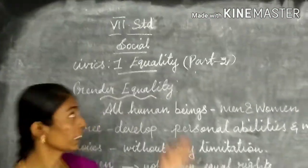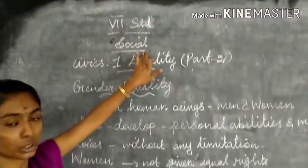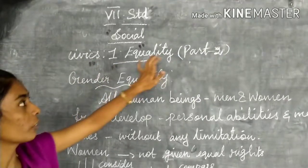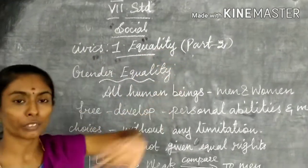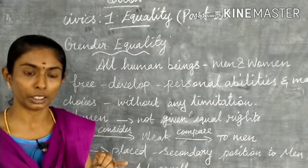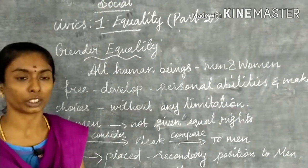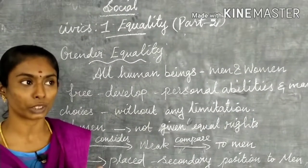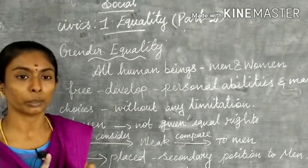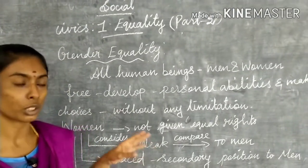Good morning students. This is the class for the 7th standard, subject Social, and the topic is Civics, first lesson: Equality. In the previous class we have already seen what is equality, the importance of equality, and types of equality — social equality, civic equality, and political equality.